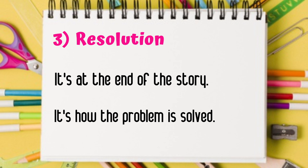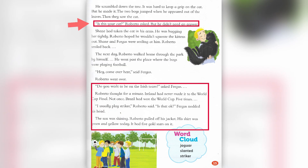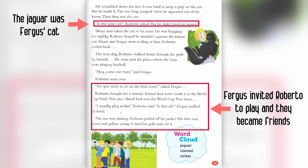So, let's see how our story, The Dreaming Tree, finishes. If you pay attention to the arrow, we can see that the jaguar was Fergus's cat. And finally, Fergus invited Roberto to play football, so they become friends at the end of our story.